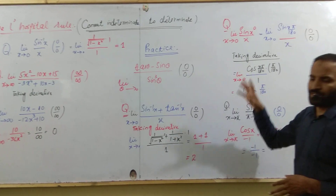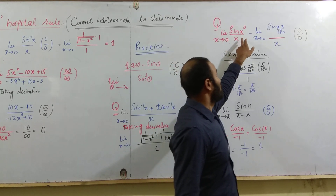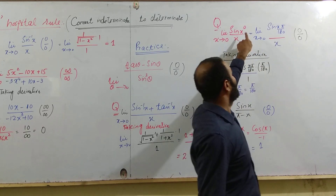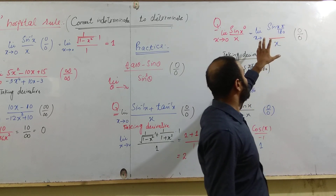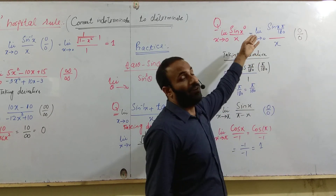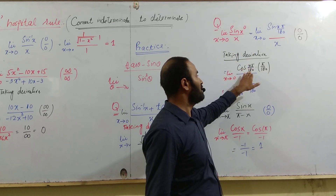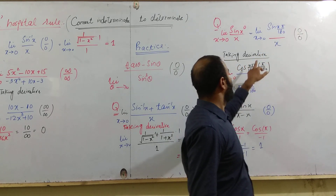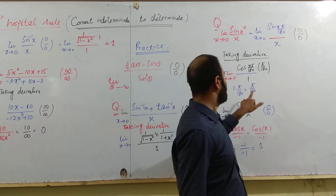There are very important questions with many examples where, first of all, you have to convert the degree into radians — so x° will be converted into x times π over 180. Now you can apply the limit; this is a 0 over 0 form. So take the derivative of the numerator, which is π times x over 180, giving derivative π over 180, and the derivative of x in the denominator is 1. Now you can put the limit and you will get π over 180.